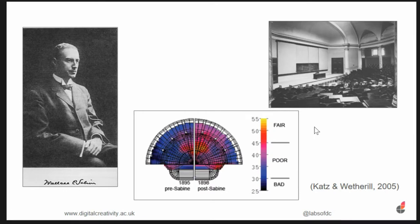This is Wallace Sabine, a professor at Harvard who was asked to fix the acoustics of the Fogg Art Museum theatre because they were so bad. He developed a series of tools to explore how acoustics work based on the space and materials in a building, producing an equation linking the volume of air in a room with the scattering properties of its materials. This was around 1896–1897, so it's not a new technique at all.